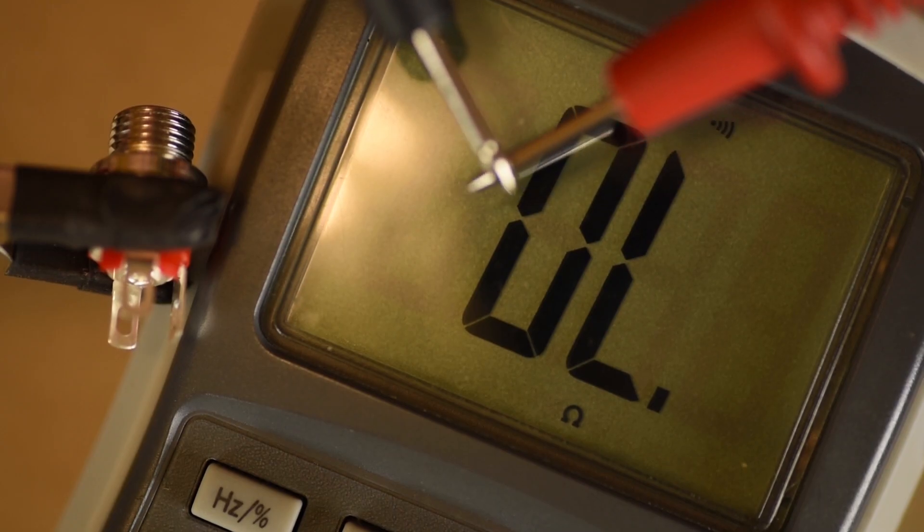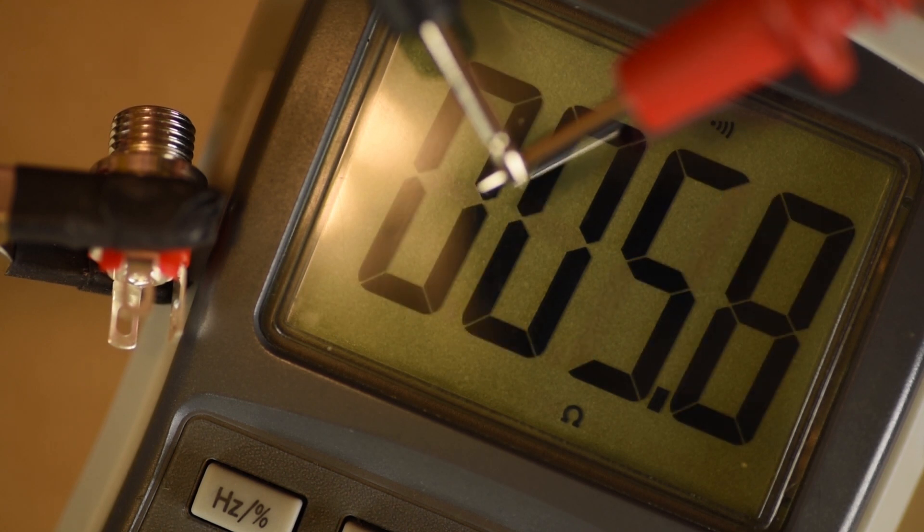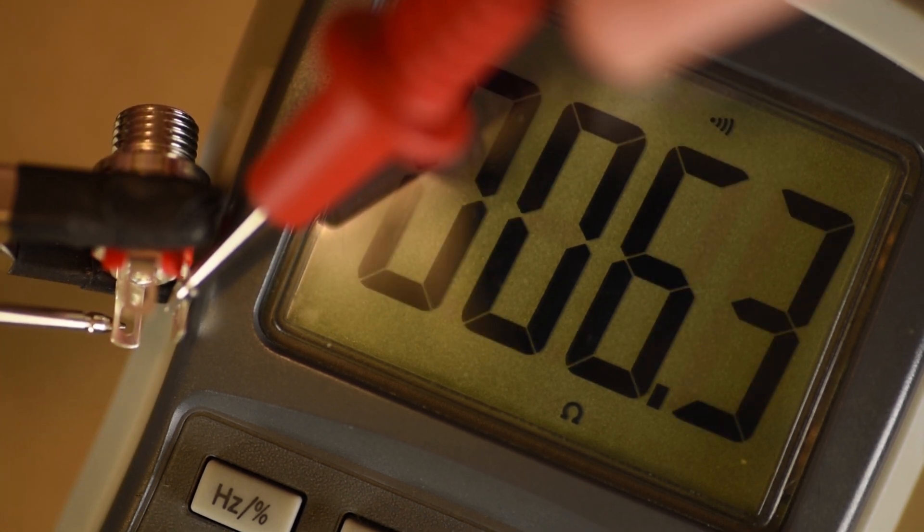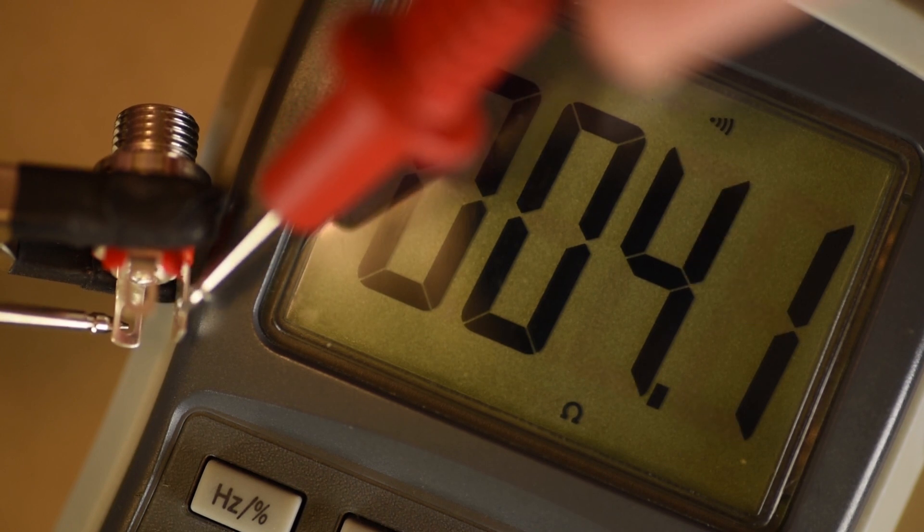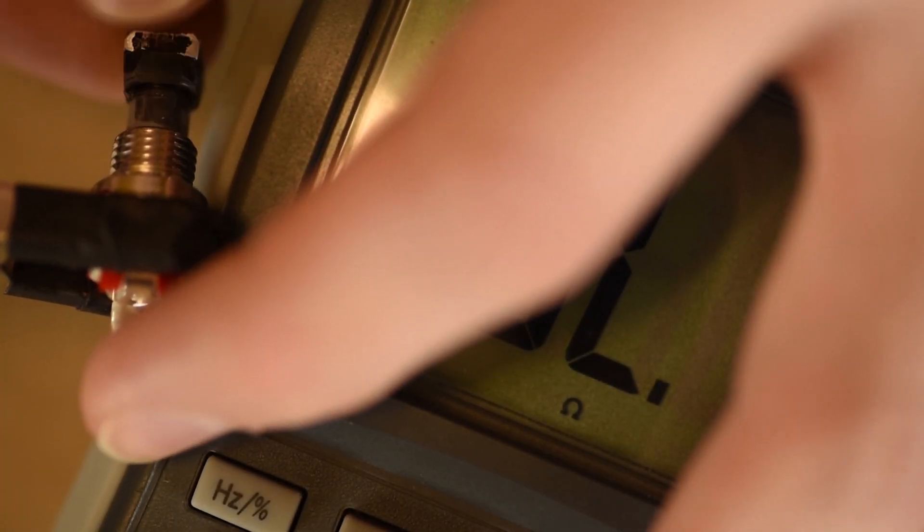I'll leave you with a quick tip about using your multimeter. If you need to check functionality on a switch or other relevant component, use continuity mode. Alternatively, you can also check with resistance.